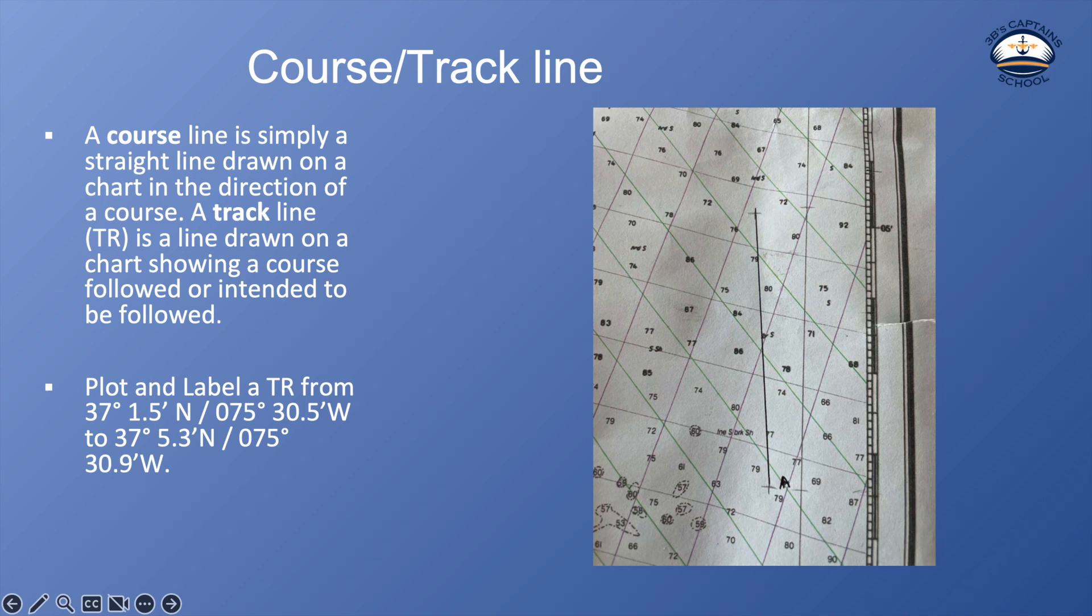A track line is a line drawn on a chart showing a course that you already followed. You can use those terms interchangeably. I use track line a lot and I go between it's either a course I intend to take or a course I followed. And we use TR as an abbreviation for track line.